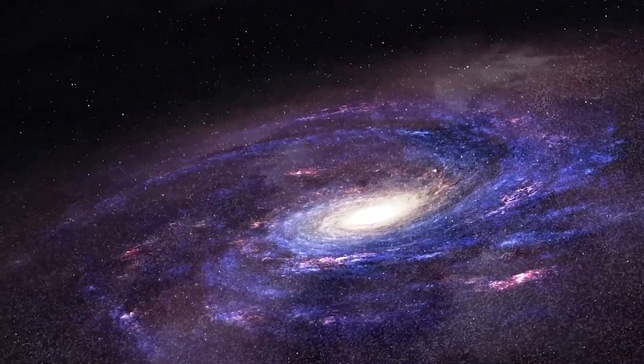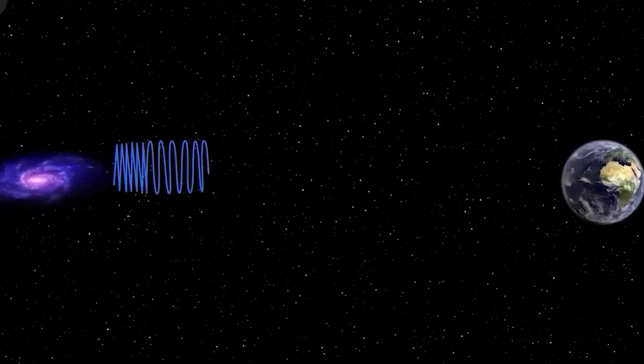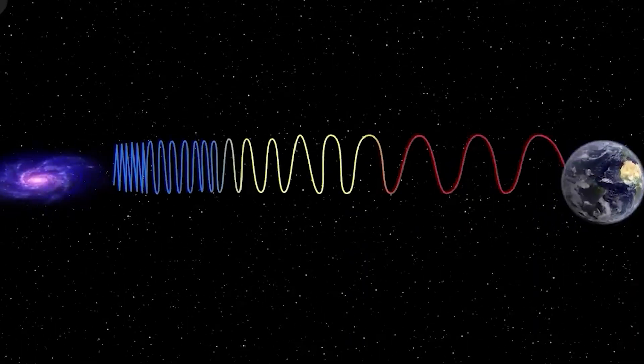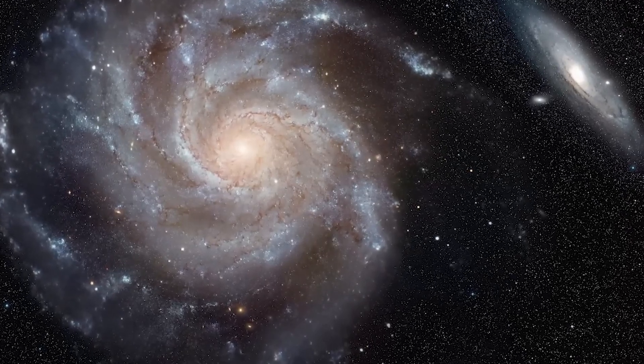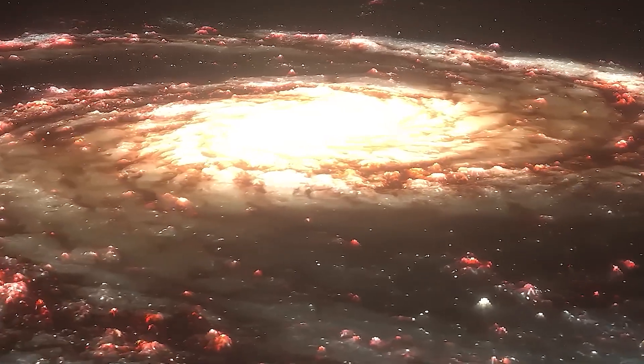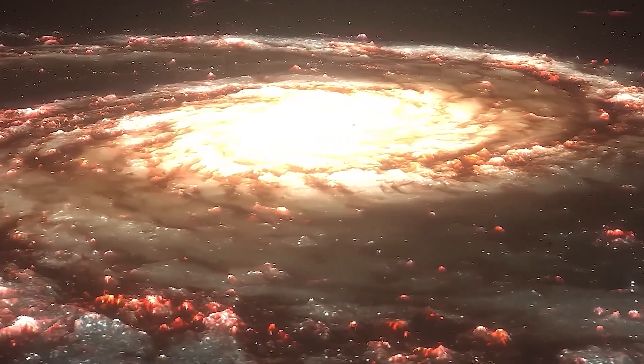Located in the constellation Pisces, about 32 million light-years from Earth, M74 is known as a grand-designed spiral because of its prominent and well-defined spiral arms.